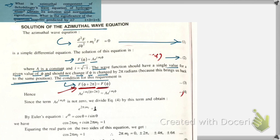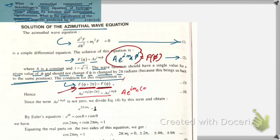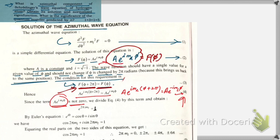That is what we have written: A·e^(i·ml·(φ + 2π)) = A·e^(i·ml·φ). This is equation number four. Since the term A·e^(i·ml·φ) is not zero, we divide both sides of equation four by A·e^(i·ml·φ), giving us e^(i·2π·ml) = 1.